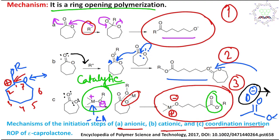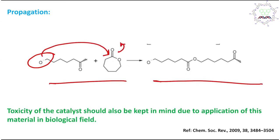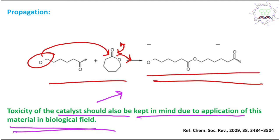Chain propagation follows: each active species — anionic or Lewis acid-mediated — attacks another caprolactone monomer, opens the ring, and extends the chain. Catalyst toxicity must also be considered because PCL is used in biomedical fields. Even though the catalyst is present in small amounts, residual metal centers or organocatalysts incorporated into the polymer can cause toxic effects in biological applications, so catalyst loading must be carefully controlled.